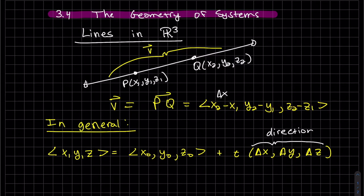Delta X, delta Y, delta Z. T, of course, is a scalar. So this is going to be parallel to V. Like I said, this can be going any direction, and this is any point on the line.